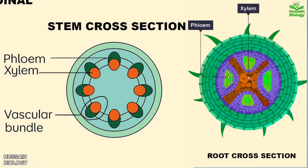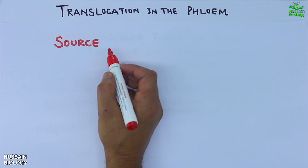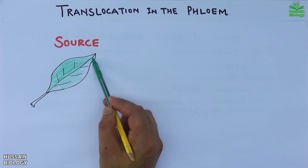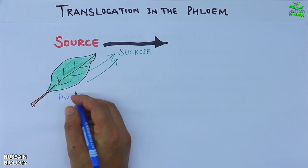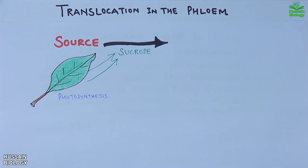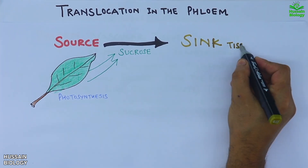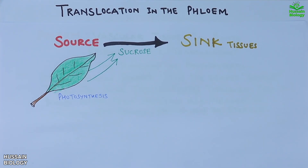To understand this further, we have the source tissues, which are primarily the leaves in the plant where photosynthesis takes place and sugars are produced, mostly in the form of sucrose. This sucrose is then transported to sink tissues, which are primarily the roots in plants.